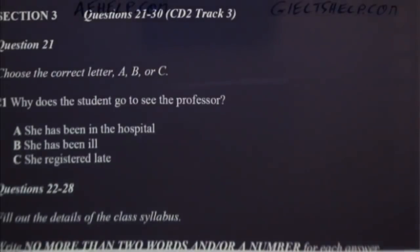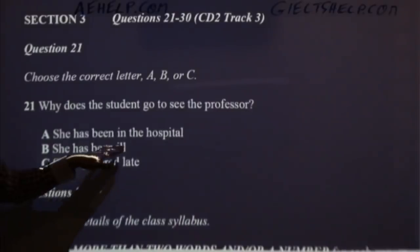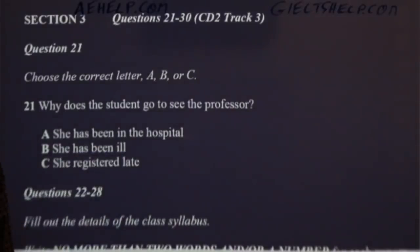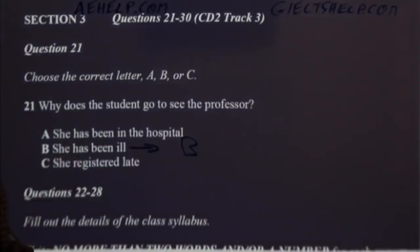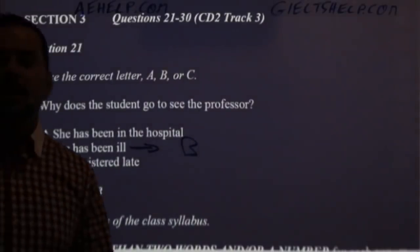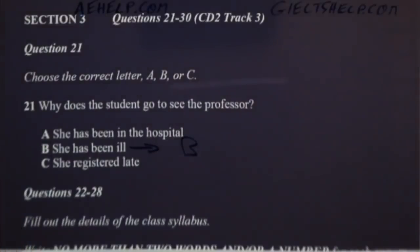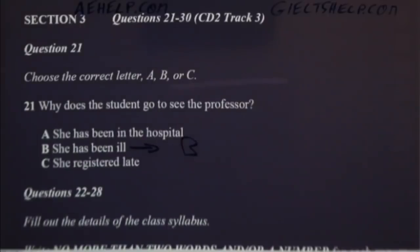First question: why does the student go to see her professor? A — she has been in the hospital; B — she has been ill; C — she registered late. The correct answer is B, she has been ill. Make sure not to assume information you did not hear — she does not say she was in the hospital. She just says she's been ill. And she did not register late; she just missed the first week of class.